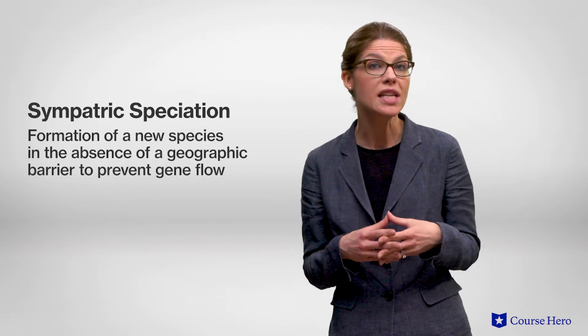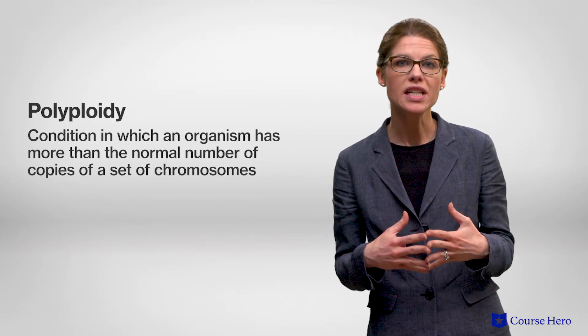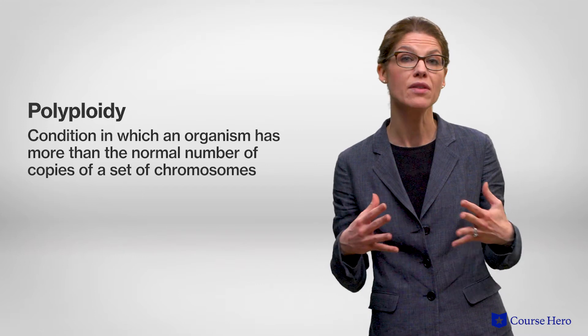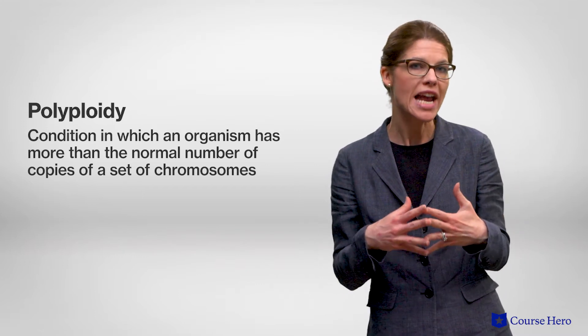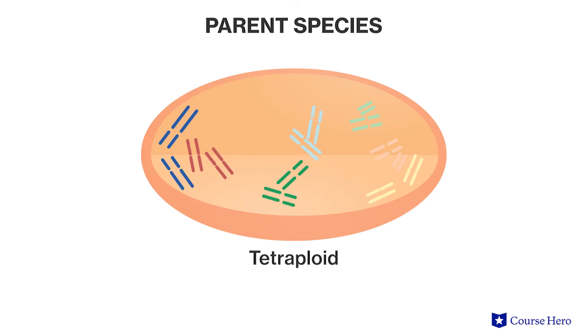With sympatric speciation, we see the formation of a new species in the absence of a geographic barrier. The most common mechanism of sympatric speciation is polyploidy, a condition in which an organism has more than the normal number of copies of a set of chromosomes, due to chromosome separation errors that happen during cell division. For example, after thousands of years of hybridization, wheat has strains that are diploid, meaning they have two sets of chromosomes, tetraploid with four sets of chromosomes, and hexaploid with six sets of chromosomes. The different number of chromosomes in these strains means that they cannot interbreed, leading to the formation of new species.